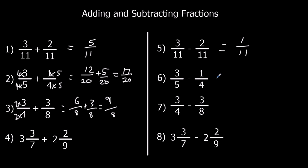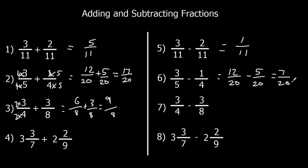We could have done these subtraction ones too. So that's 12 over 20 take away 5 over 20, which is 7 over 20. And this is 6 over 8 take away 3 over 8, which is 3 over 8.